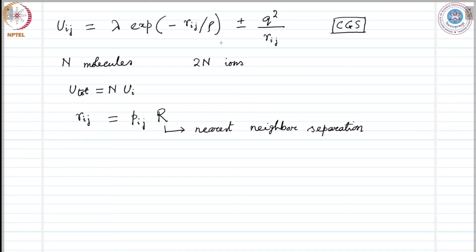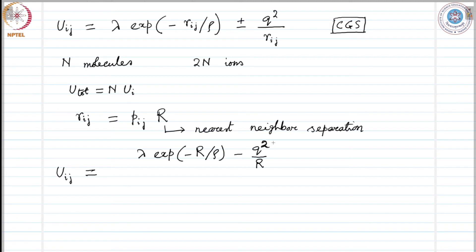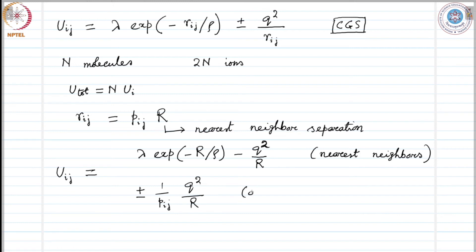With this approximation, u_ij can be written as lambda exponential of minus capital R over rho minus Q squared over capital R — the minus sign because the nearest neighbor is an oppositely charged ion. For ions that are not nearest neighbors, the interaction would be plus or minus 1 over p_ij times Q squared over R.